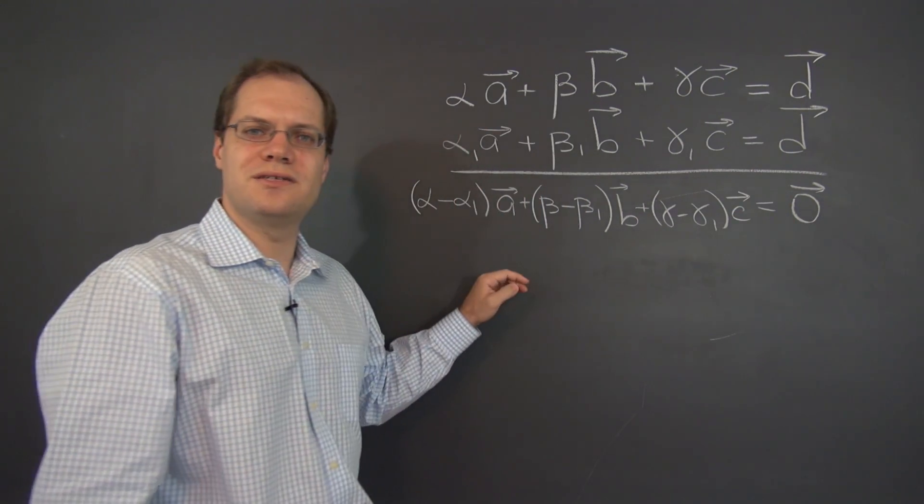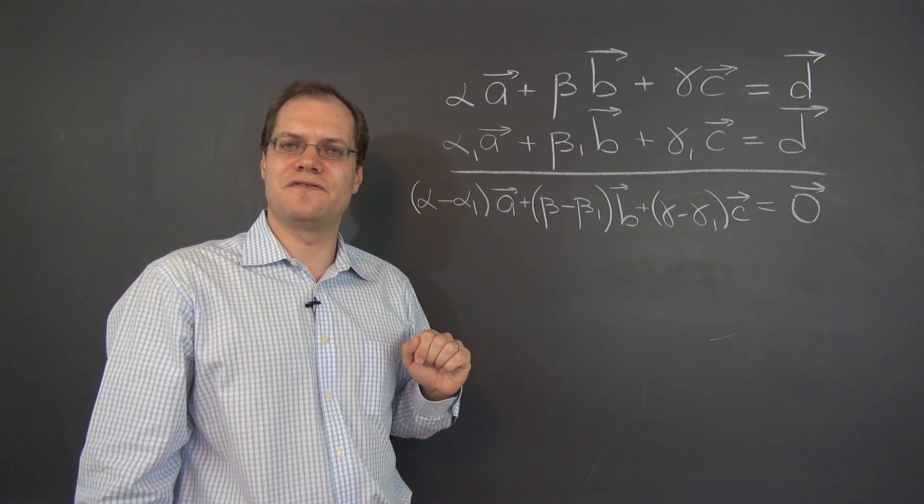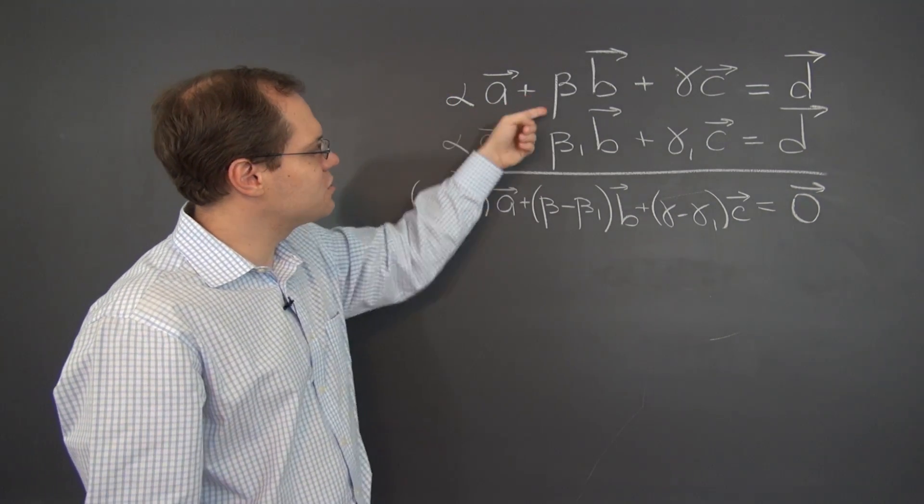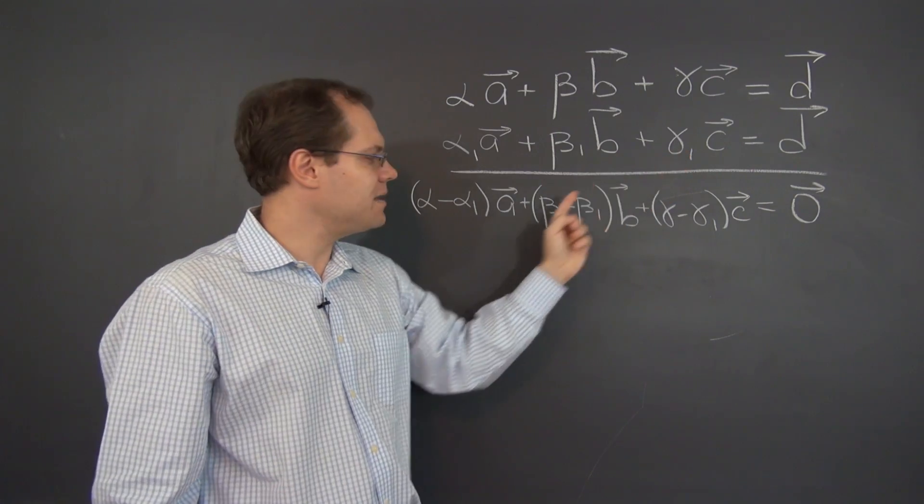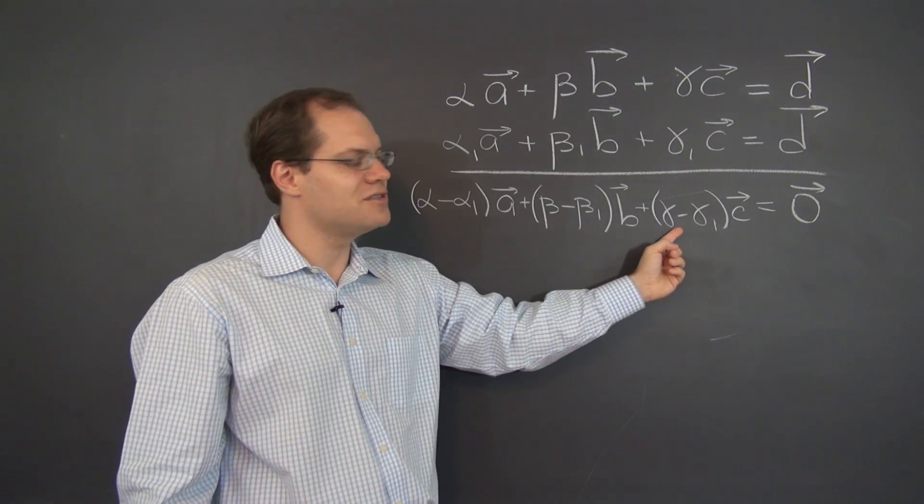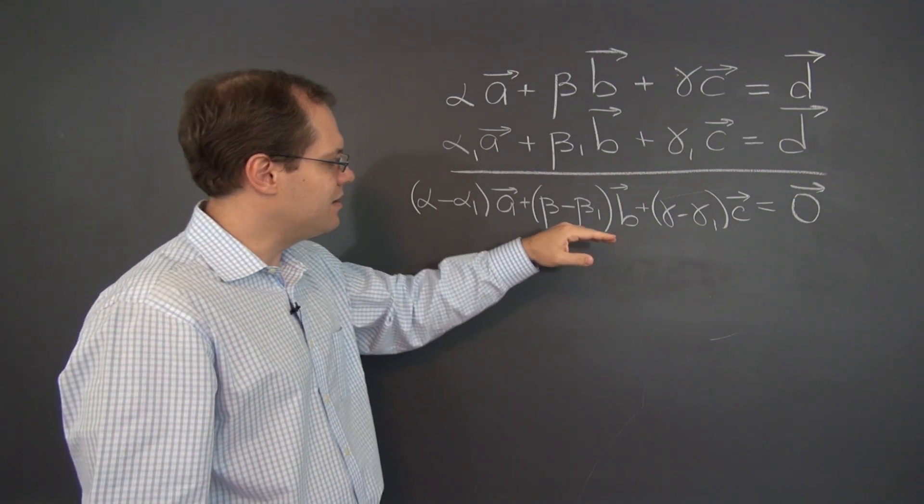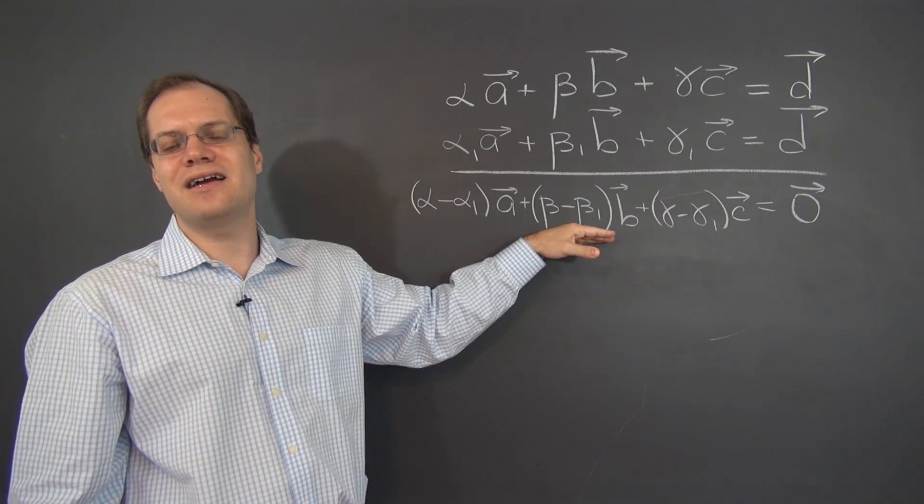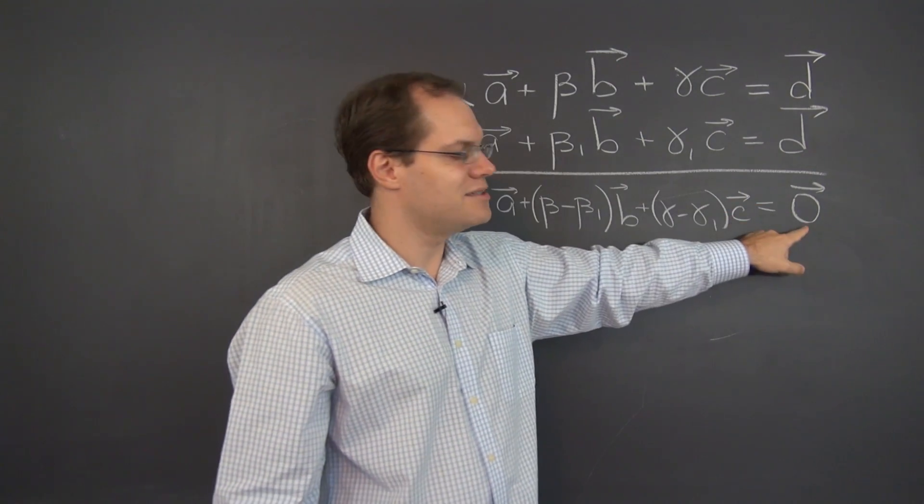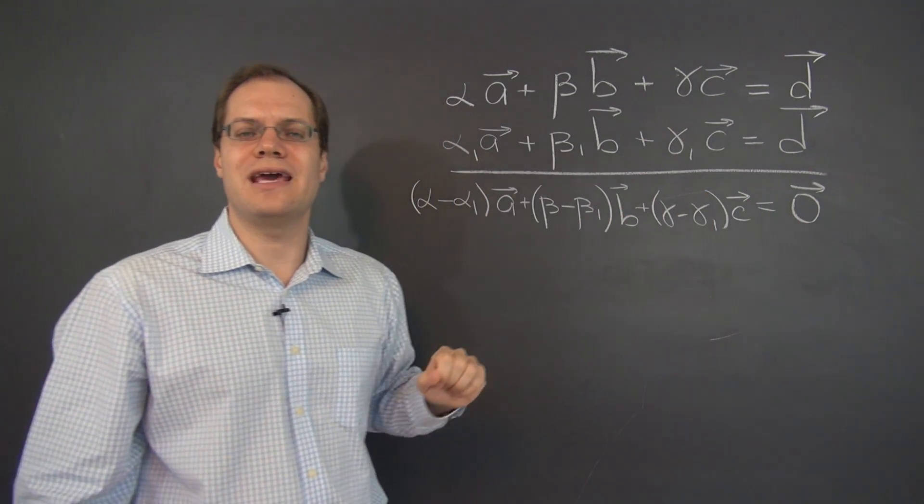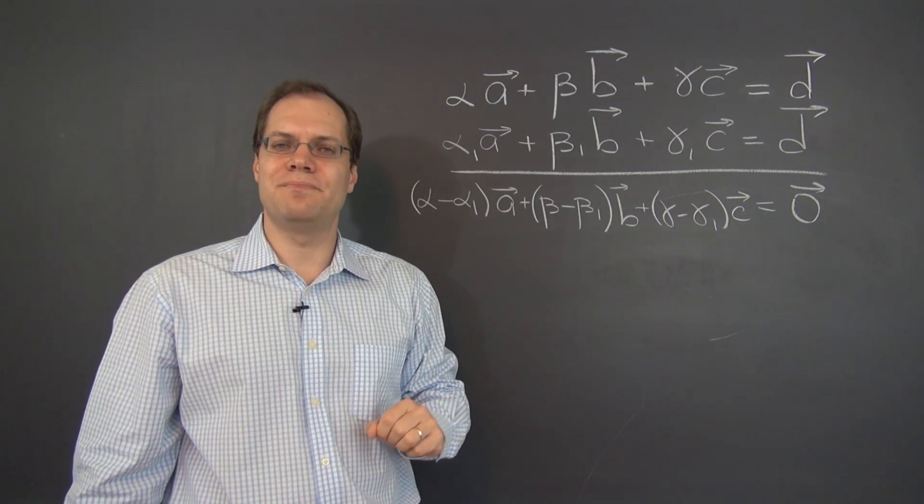Now we assumed that the linear combinations are different, so at least one of these coefficients don't match. That means that at least one of these coefficients is not zero. And what do we have? We have a non-trivial linear combination that equals zero. And therefore the vectors a, b, and c are linearly dependent.